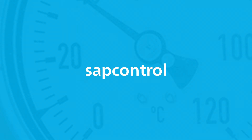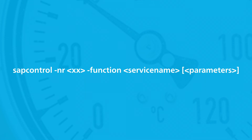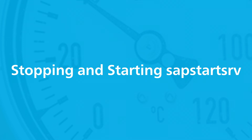A SAP Control command generally takes this form: XX is the two-digit SAP HANA instance number, service name is the name of the service function you want to call, and parameters represents the parameters to be passed to the service function. There are more command line arguments than this, but only NR and function are mandatory. Use 'sapcontrol -H' for a list of all options and all service functions with their parameters. To stop the service process, use this command.